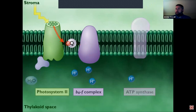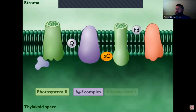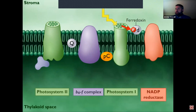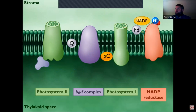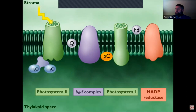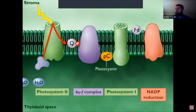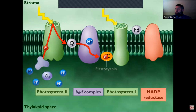When photosystem one absorbs a photon of light, its reaction center passes high-energy electrons to ferredoxin. The enzyme NADP reductase then transfers the electrons to NADP to form NADPH. Electrons lost from photosystem one are replaced by electrons generated from photosystem two. A small protein called plastocyanin (PC) carries the electrons from the B6F complex to photosystem one.